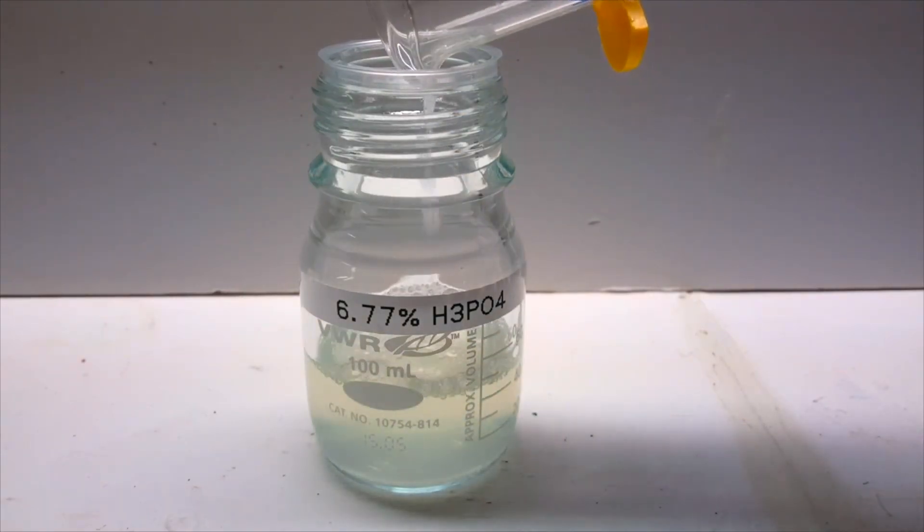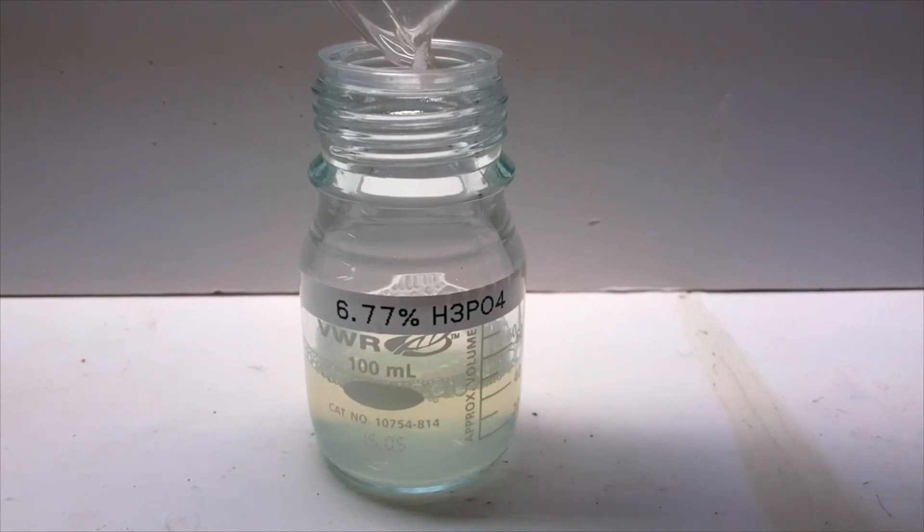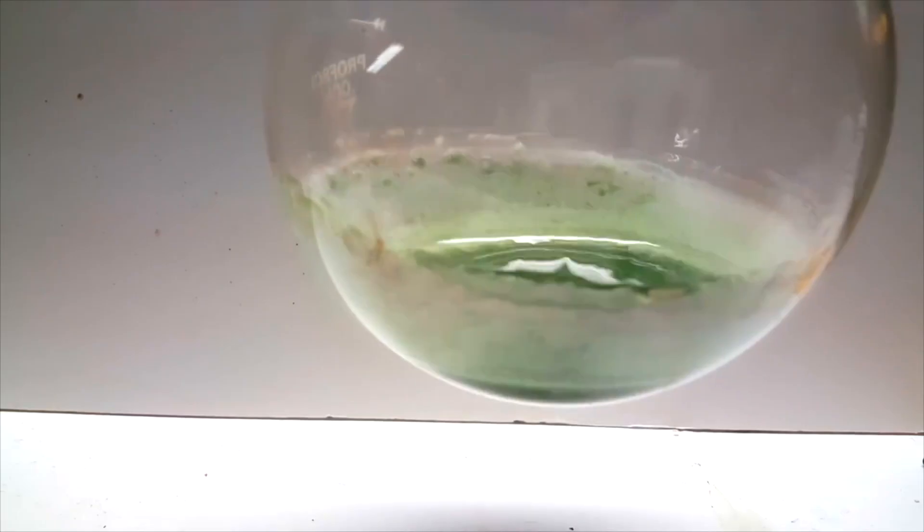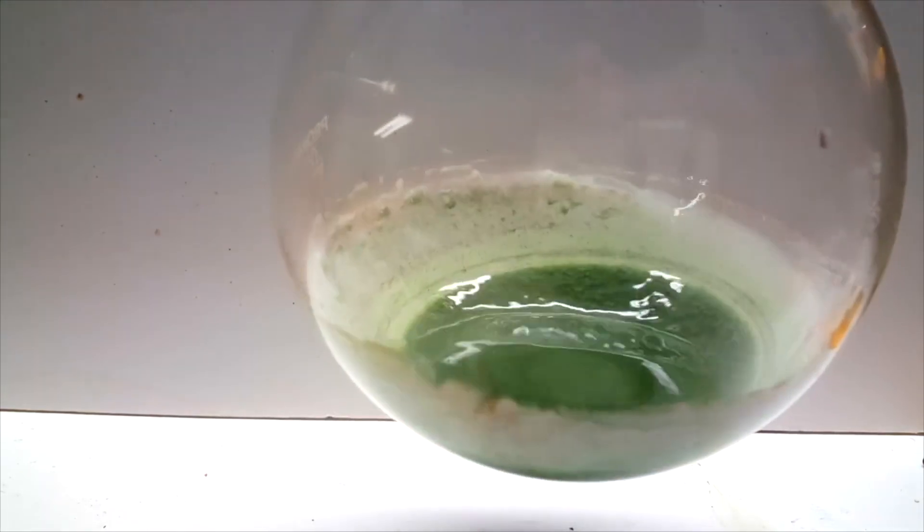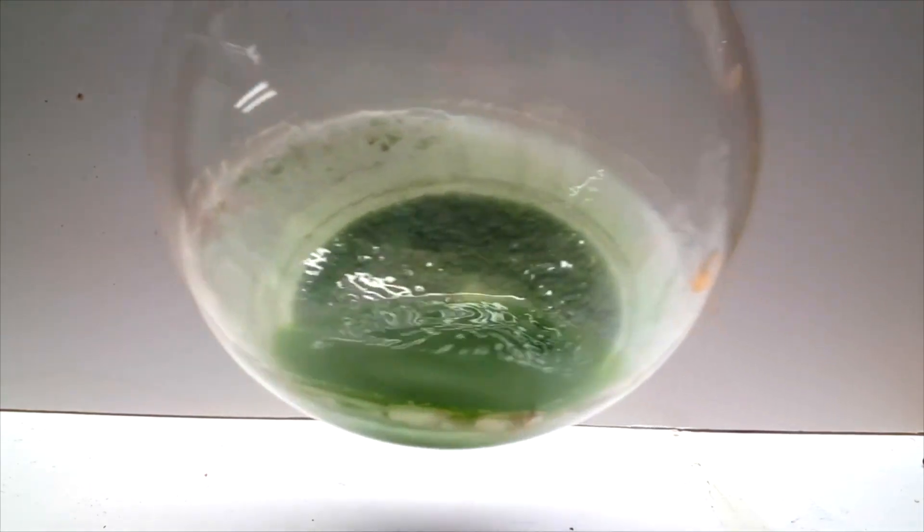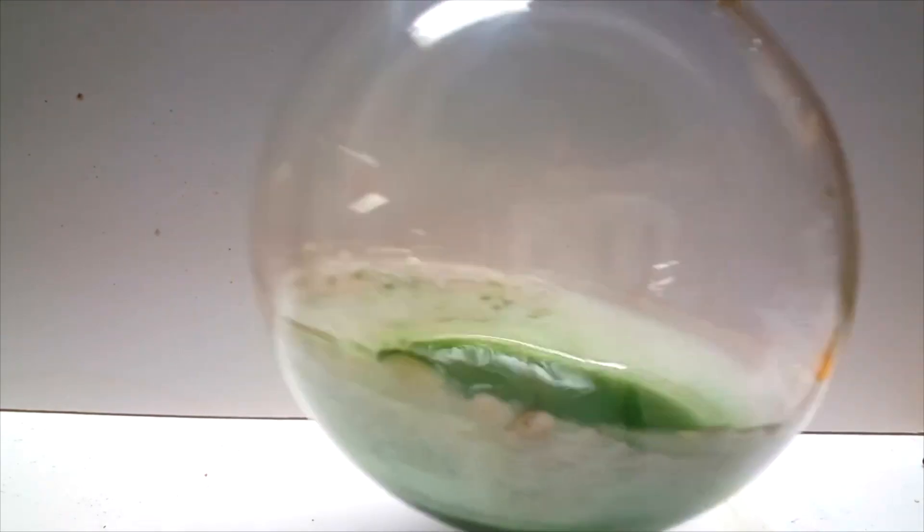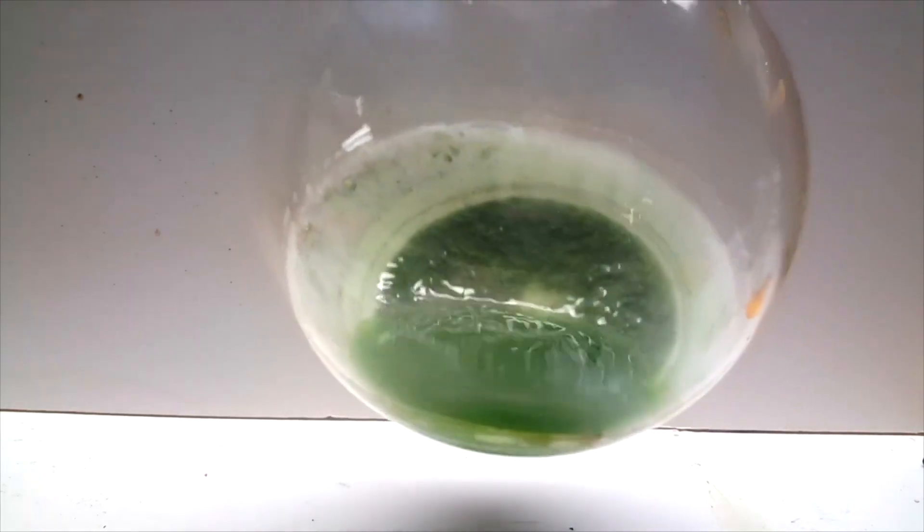The yield was pretty terrible, with only 47ml of a cloudy 6.77% acid collected. I saved the green liquid left in the distilling flask from the last run, so I decided I would try to improve my methods from last time to get a better yield.